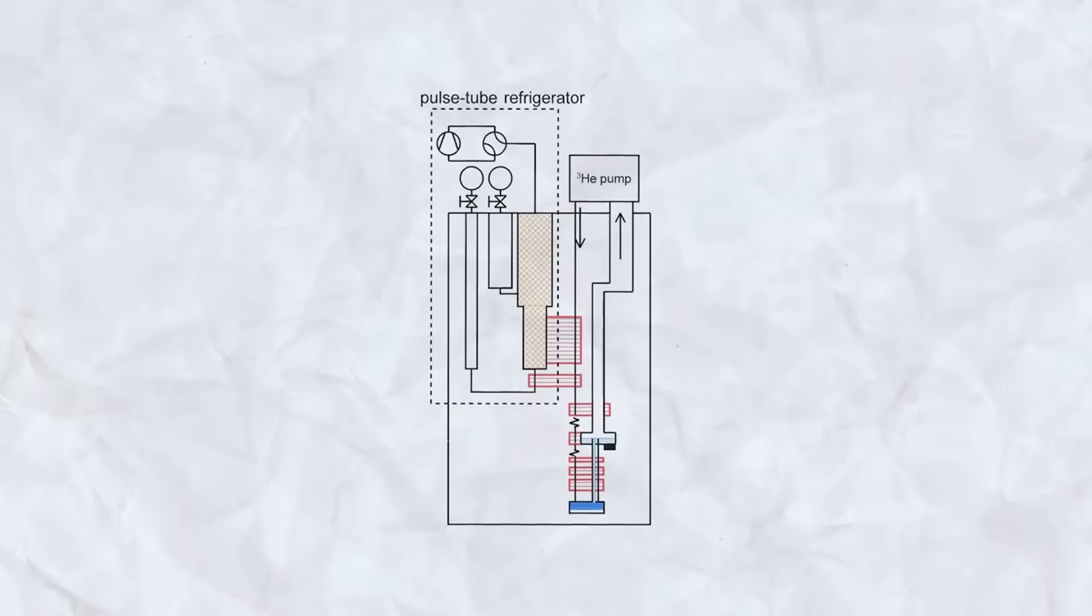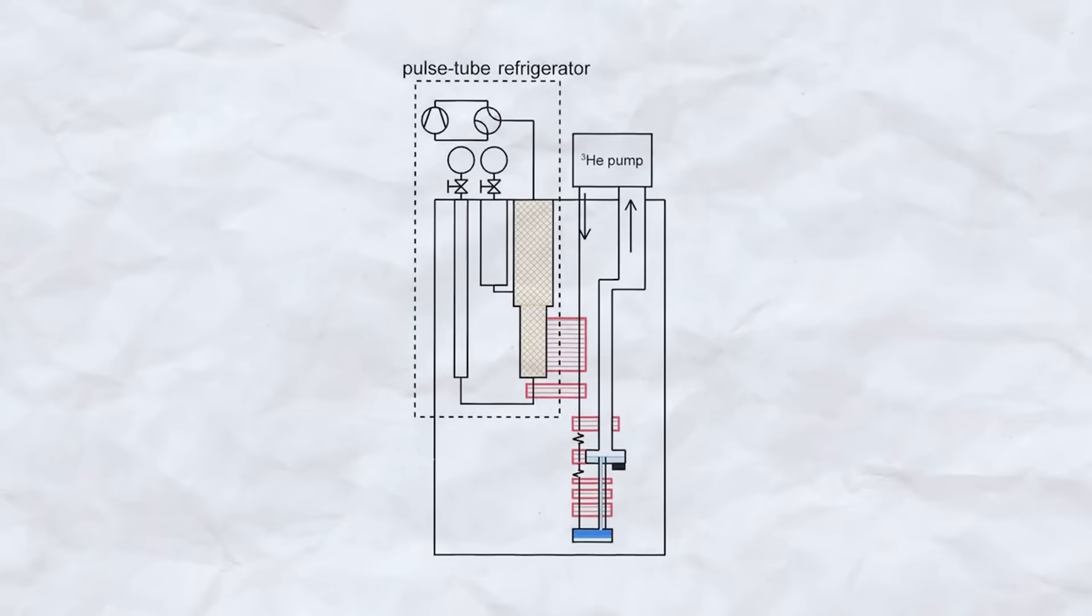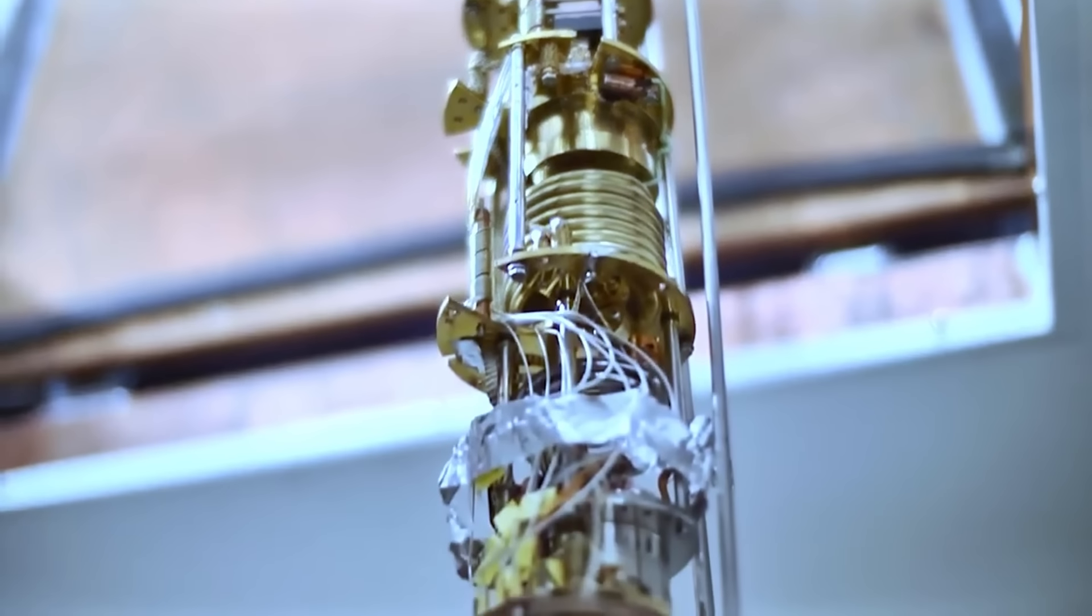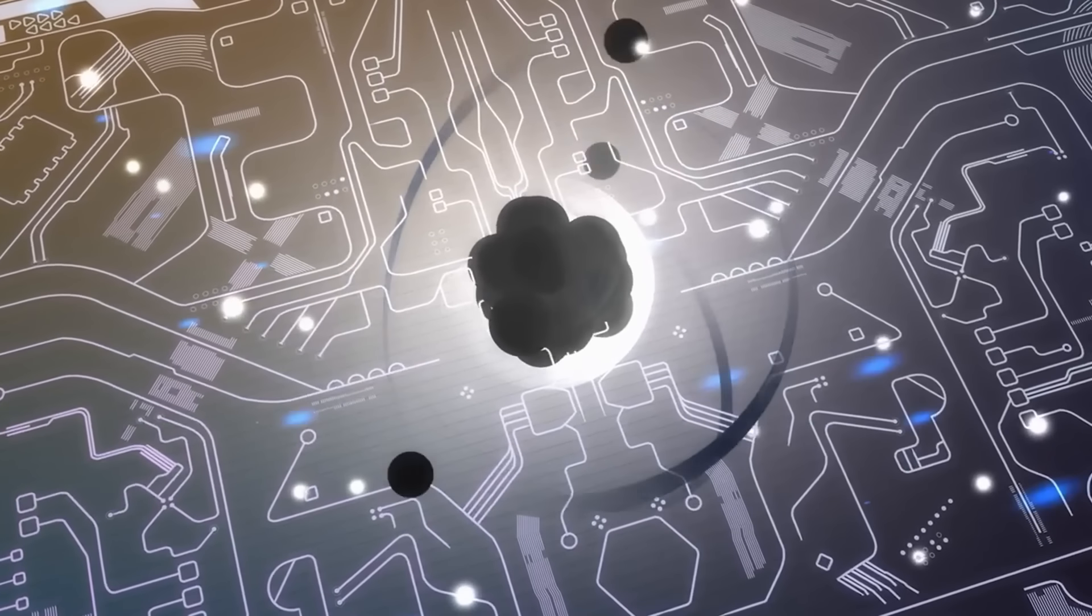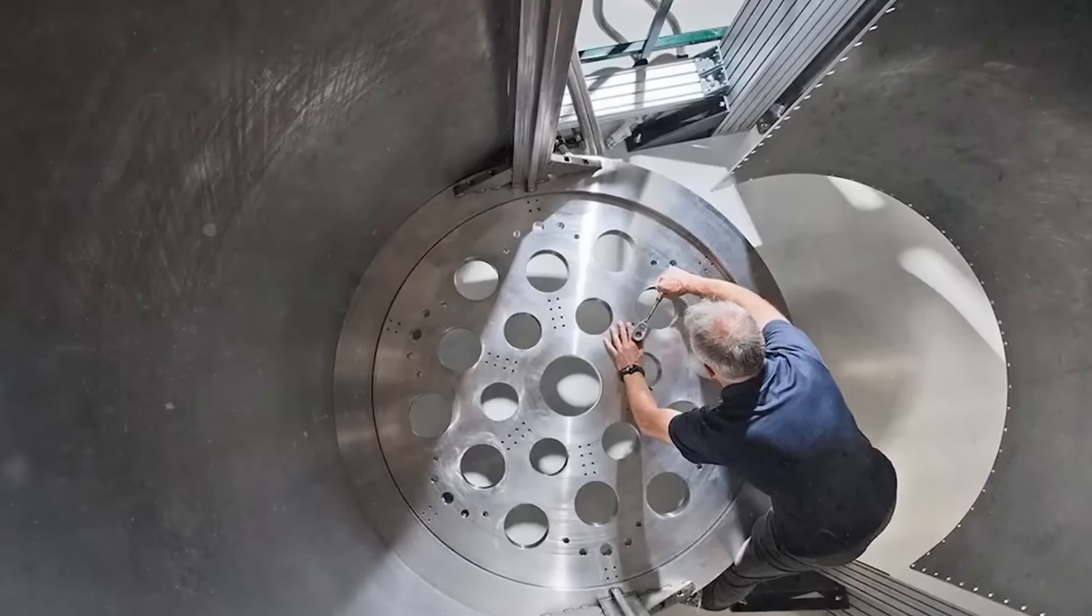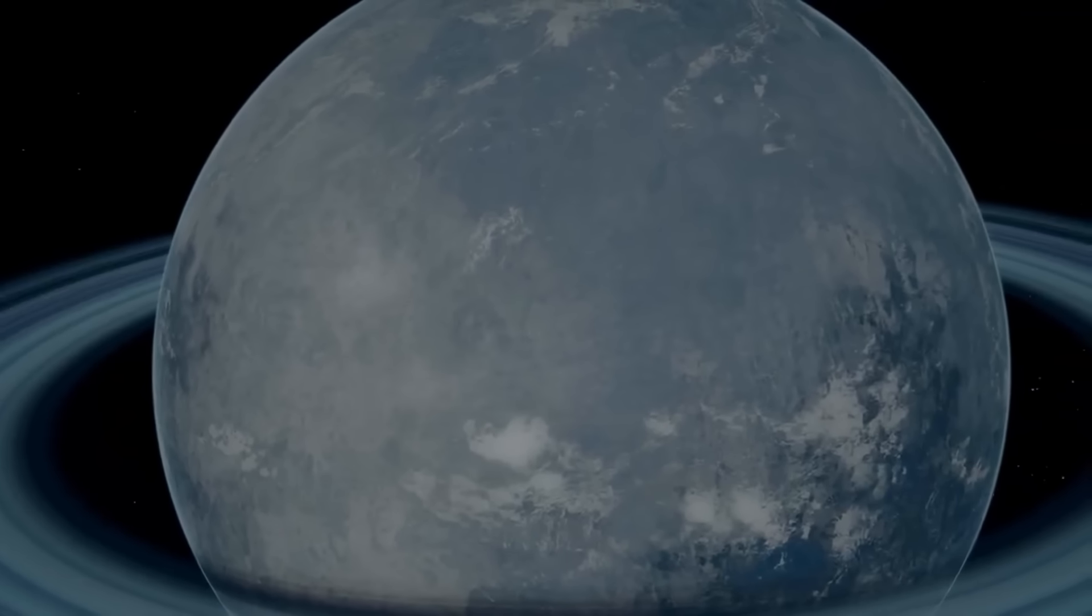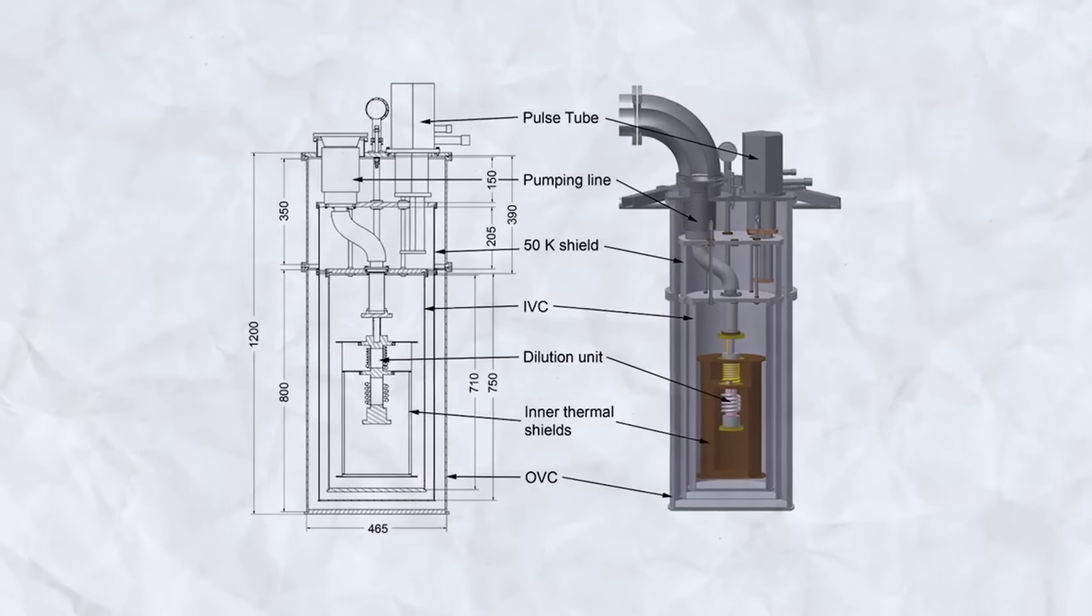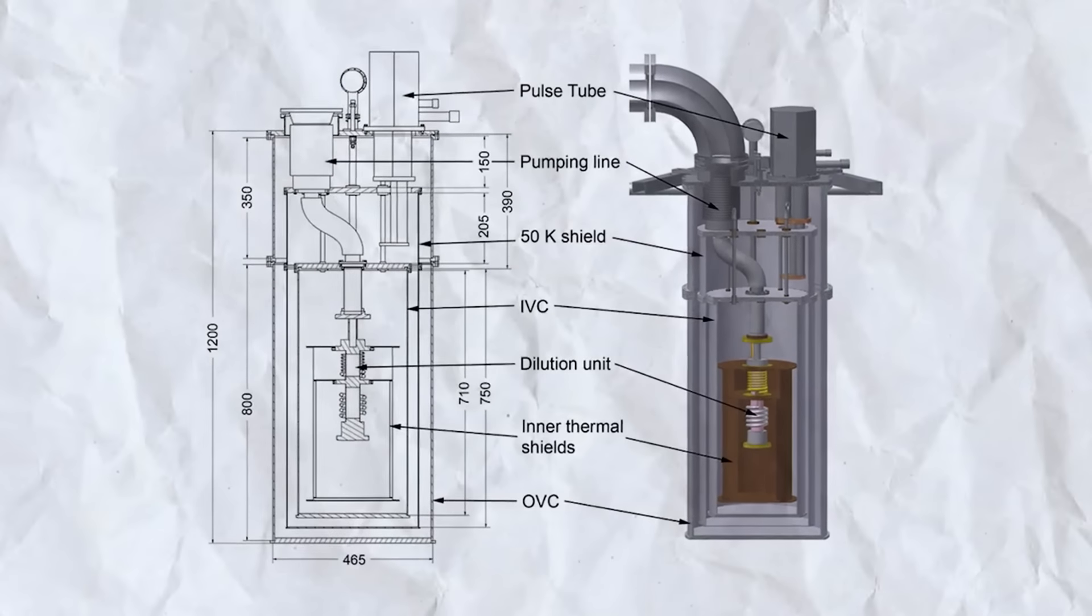The science behind it, called dilution refrigeration, takes advantage of the unique thermodynamic properties of these helium isotopes to cool the system effectively. This ultra-cold environment is vital for the qubits to maintain their coherence, allowing them to perform quantum operations without the interference of thermal energy. The sophistication of dilution refrigerators makes them akin to engineering marvels. Imagine creating a place within our labs that's colder than the vast expanses of outer space. These refrigerators manage to do just that, becoming one of the few places in the universe where such extreme conditions are artificially maintained.